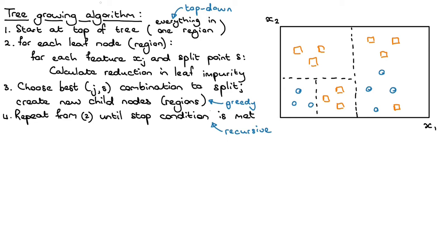Let's say we've reached a point in the tree growing process and now we need to figure out what the best split to make next is. We're at step number two. For each of the leaf nodes — each of the regions — for each of the features xj (x1 and x2), and each possible split point s, we consider all possible points where we can make a split, and calculate the reduction in leaf impurity.